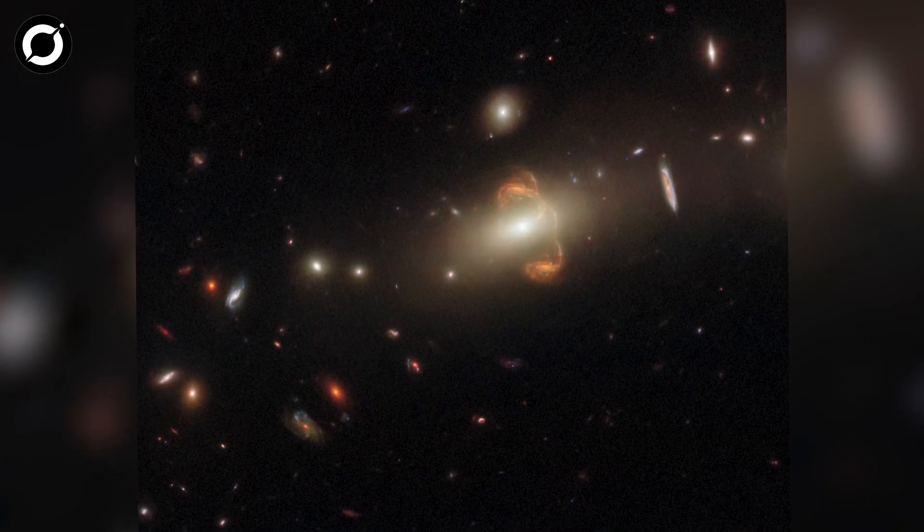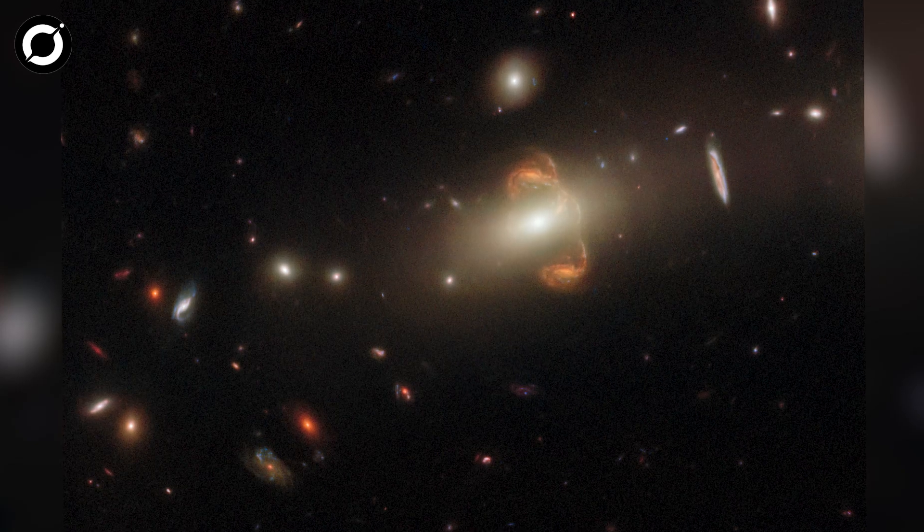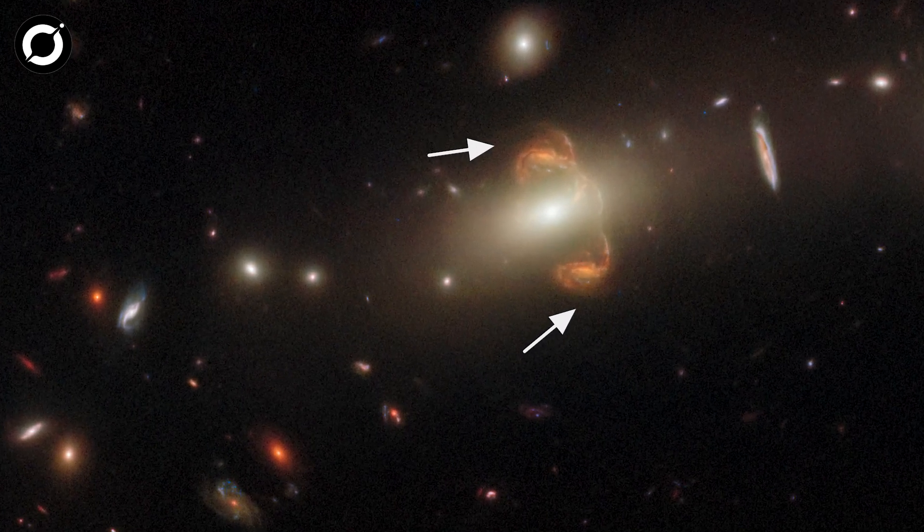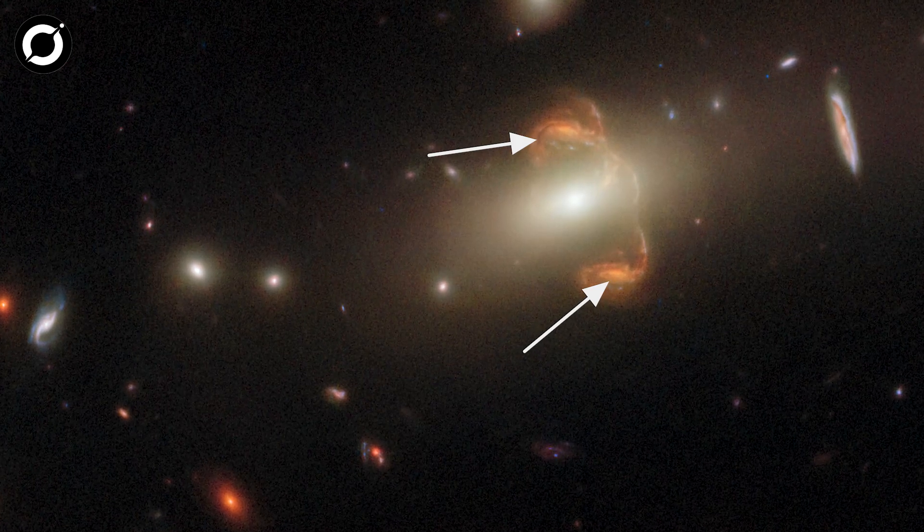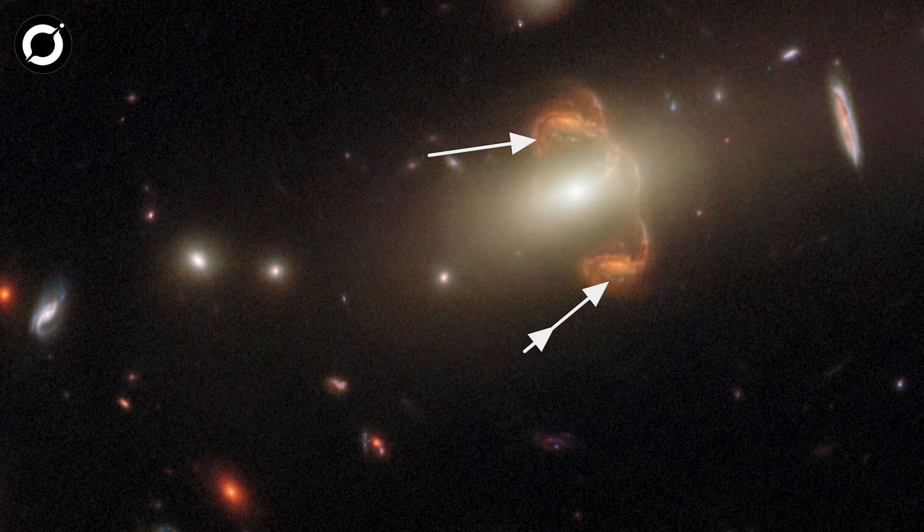There's something very odd about this image from the Hubble Space Telescope. If you look closely, you can see two almost mirror image orange-colored galaxies seemingly connected by a long filament.